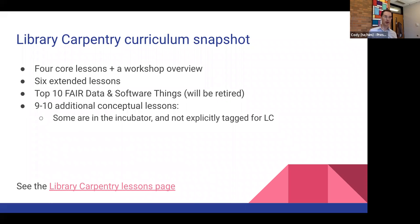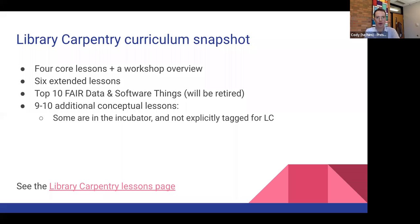In terms of library carpentry curriculum, it's a little bit different than software and data carpentry. There are four core lessons, which also includes a really short workshop overview, but there are some more modular lessons. There are six extended lessons. The core lessons are: intro to working with data, which covers regular expressions; the Unix shell; OpenRefine; and intro to Git. The extended lessons are SQL, tidy data, web scraping, intro to Python, data for archivists, and R.